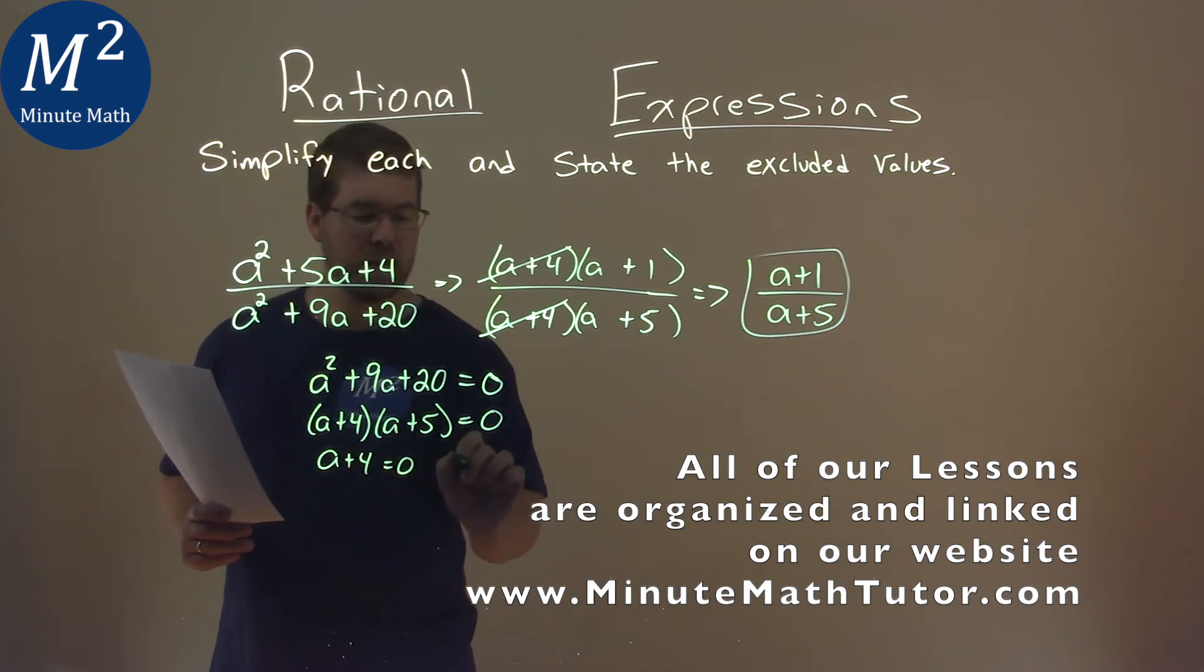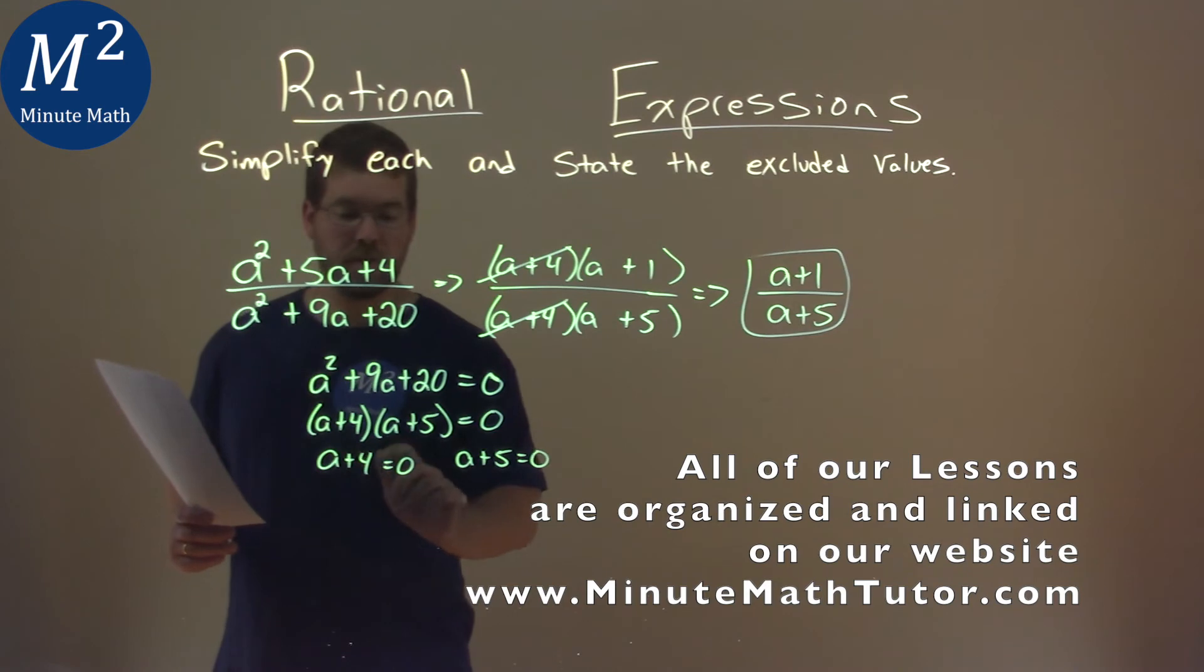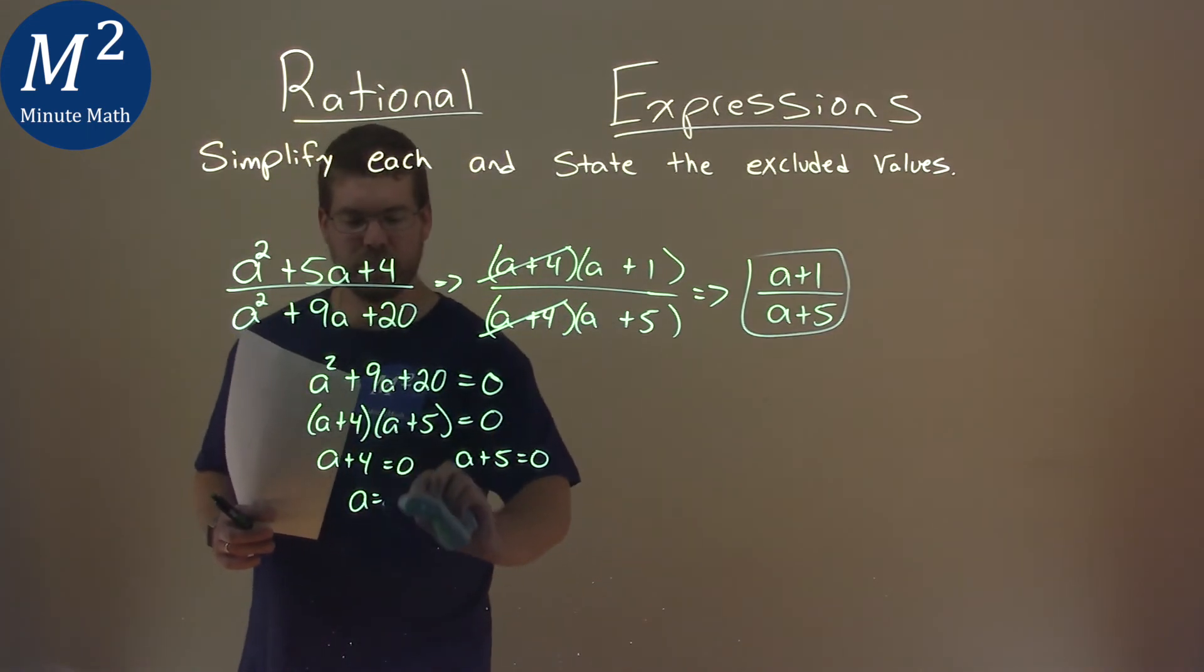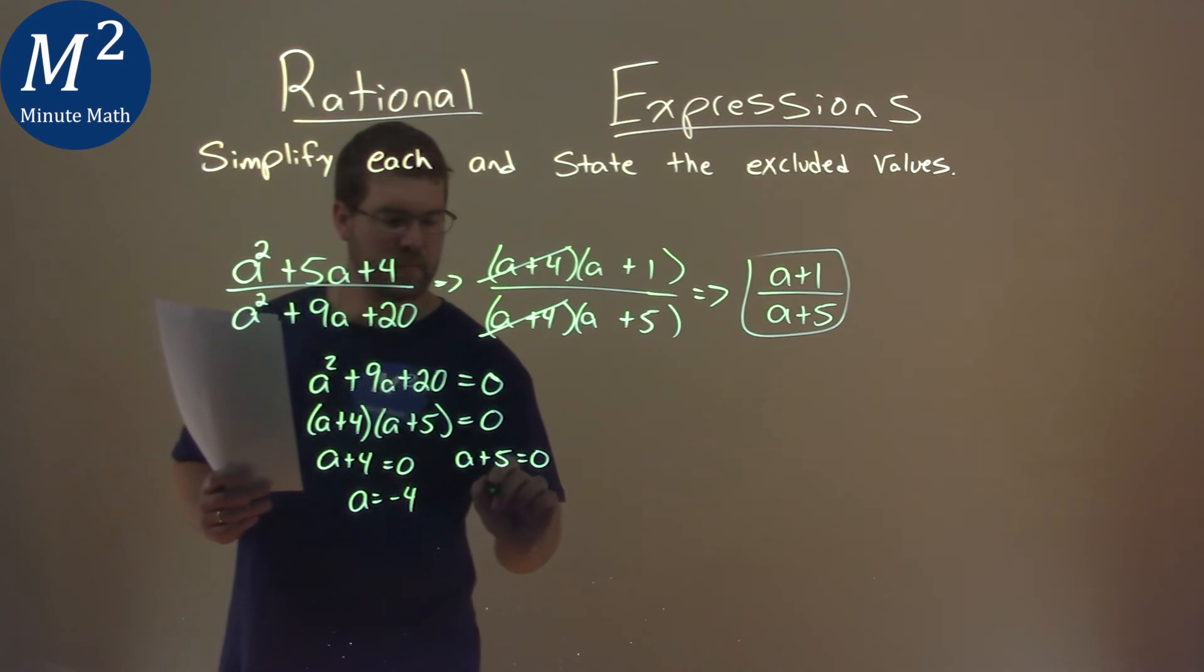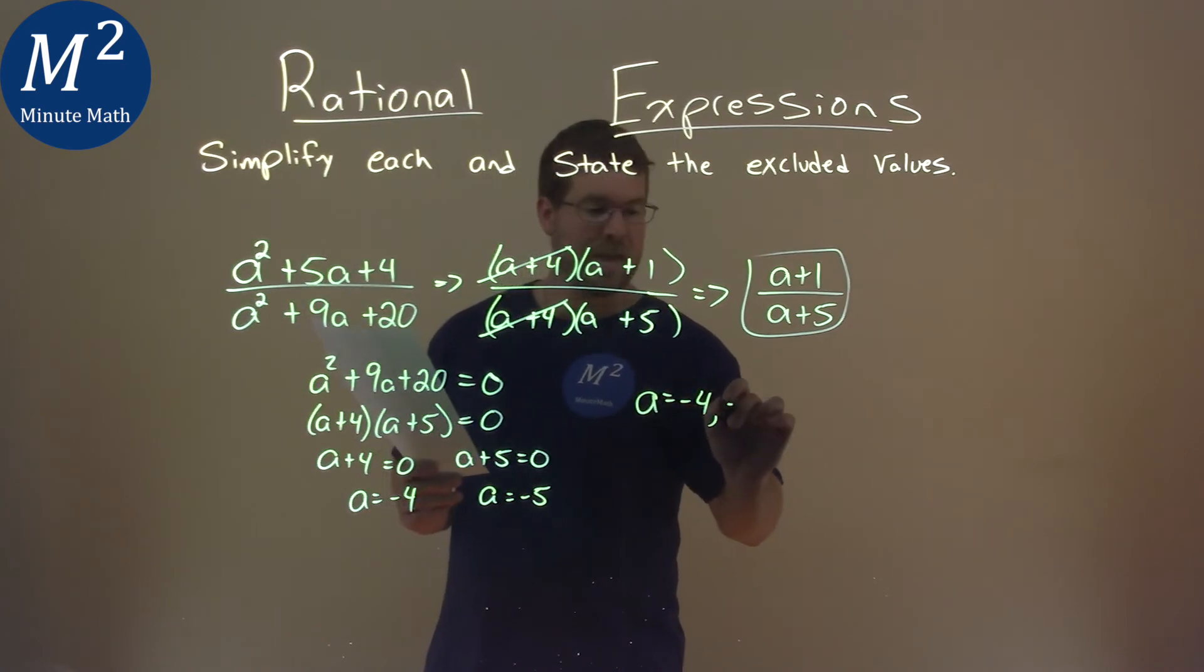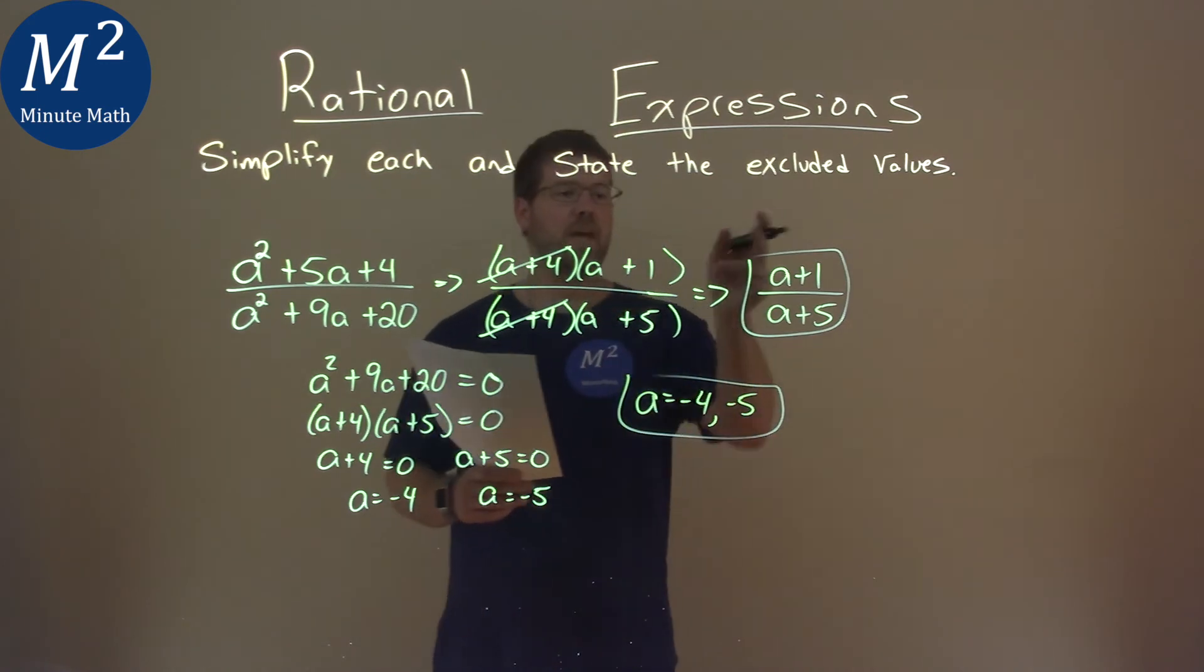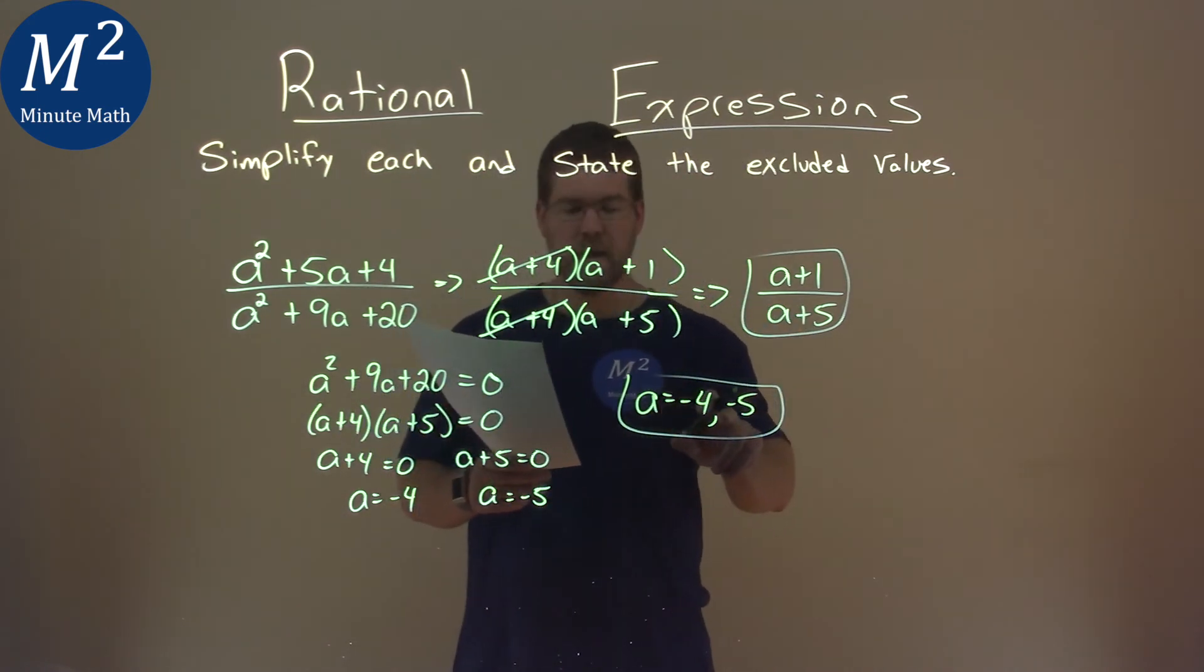We can set each part individually equal to 0: a plus 4 equals 0, and a plus 5 equals 0. Subtract 4 from both sides, a equals negative 4. Subtract 5 from the other side, a equals negative 5. So our two excluded values are negative 4 and negative 5. Our final simplified answer is (a plus 1) over (a plus 5), and the excluded values are negative 4 and negative 5.